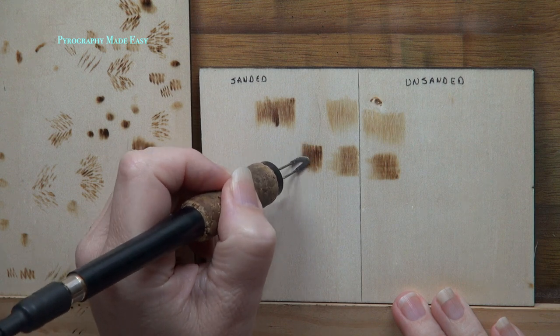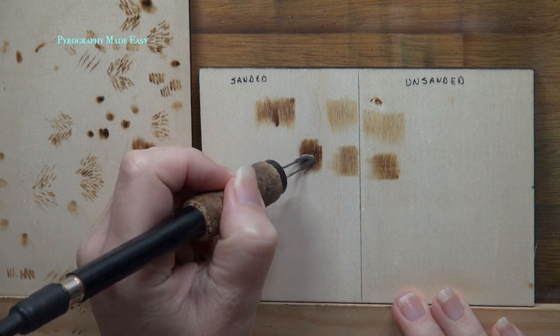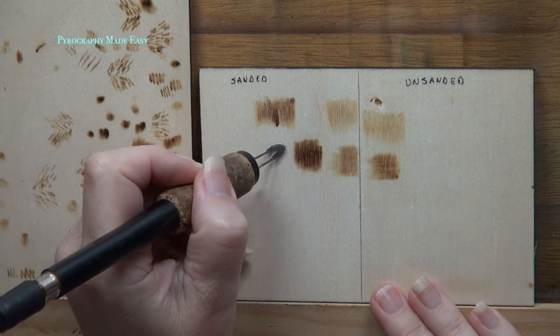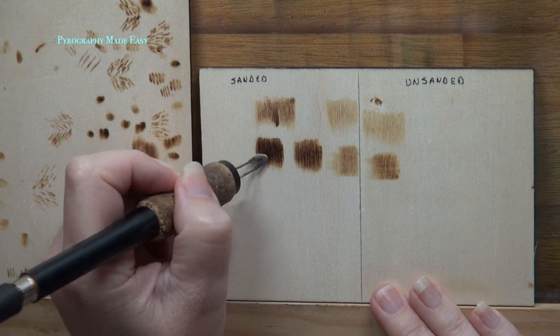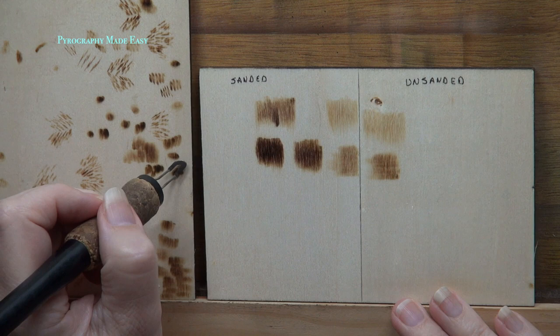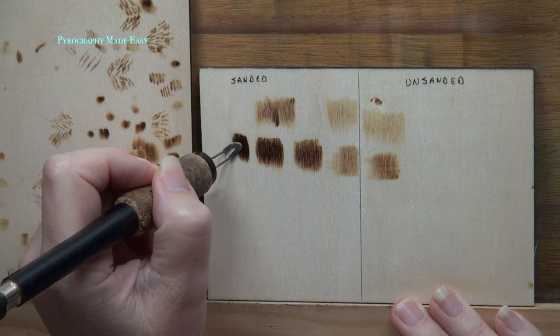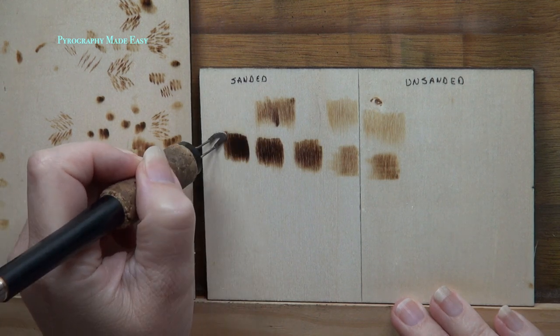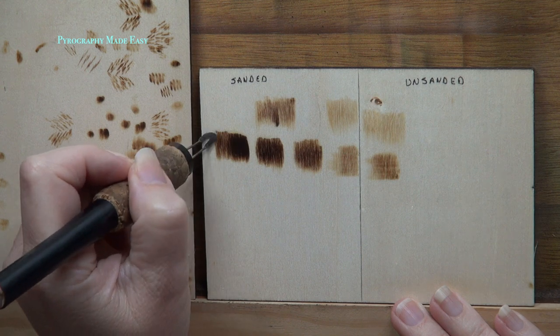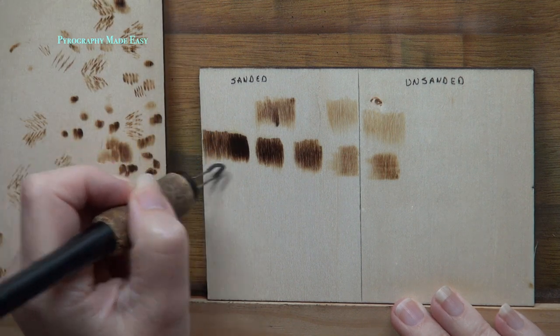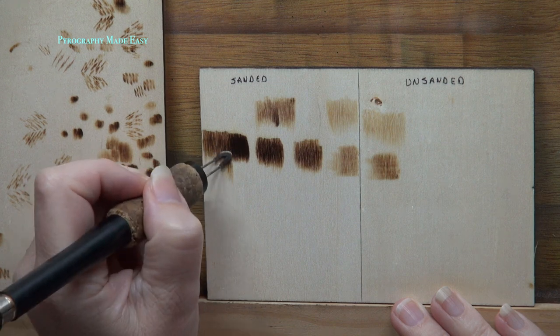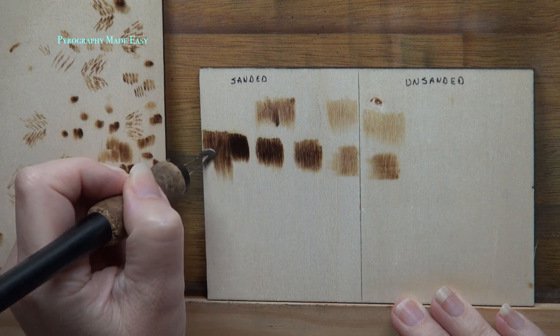With each of these test burns, I kept increasing the heat setting on my burner. The resulting burns got darker and darker. The heat on this burn was so high that smoke formed. When you burn at higher heats like this, it becomes very difficult to get smooth, consistent results. I highly recommend turning down the heat.